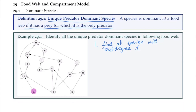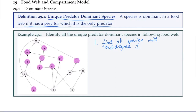So let's first identify all the species that have out-degree one. A has out-degree one, as do E, F, I, J, M, N, K, and L. Note, for example, G does not have out-degree one — it has out-degree two, so G cannot be classified as unique predator dominant. Now I need to look at what eats those species. Species A is eaten by species D, but A is actually a primary producer, so we're not going to classify D as a unique predator dominant species because it eats a primary producer.